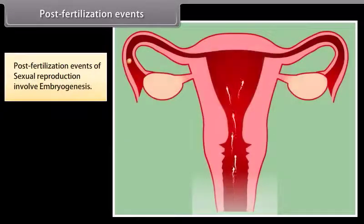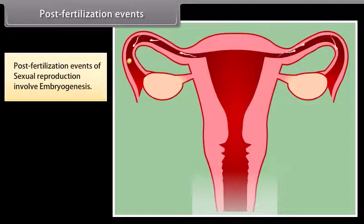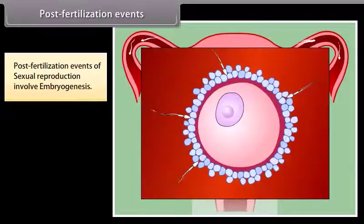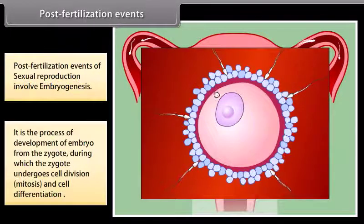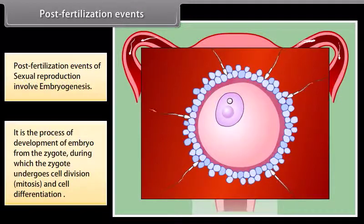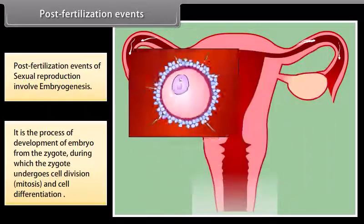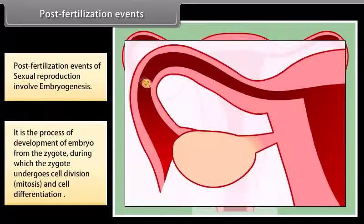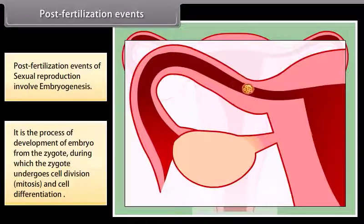Post-fertilization events of sexual reproduction involve embryogenesis. It is the process of development of an embryo from the zygote, during which the zygote undergoes cell division, mitosis, and cell differentiation as shown in the diagram.